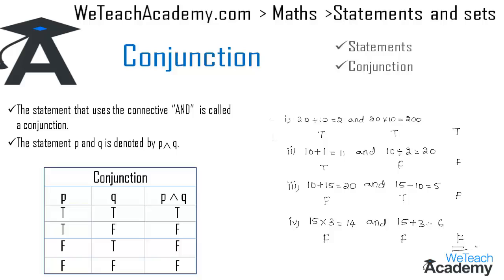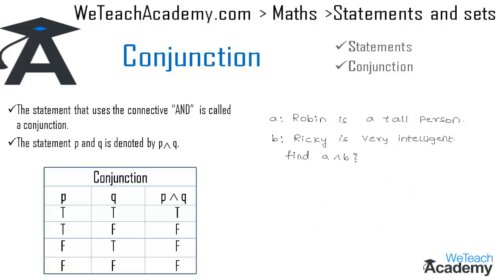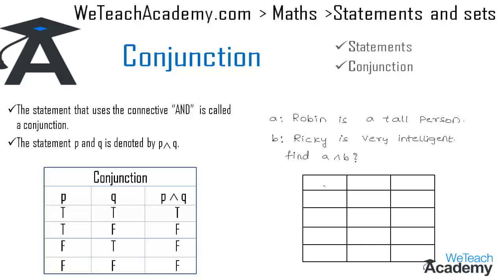Now let us move to another example. We have statement A: 'Robin is a tall person,' and statement B: 'Ricky is very intelligent.' Let us find the truth value for A ∧ B. We draw a truth table of three columns — the first two give truth values for A and B, and the third gives the truth value for conjunction A ∧ B.